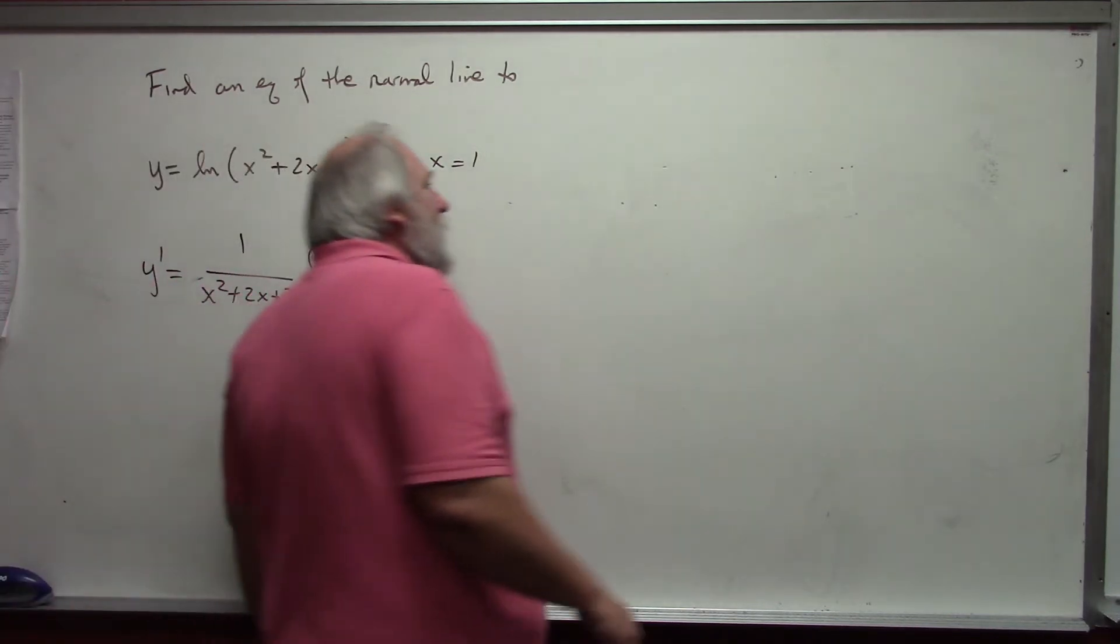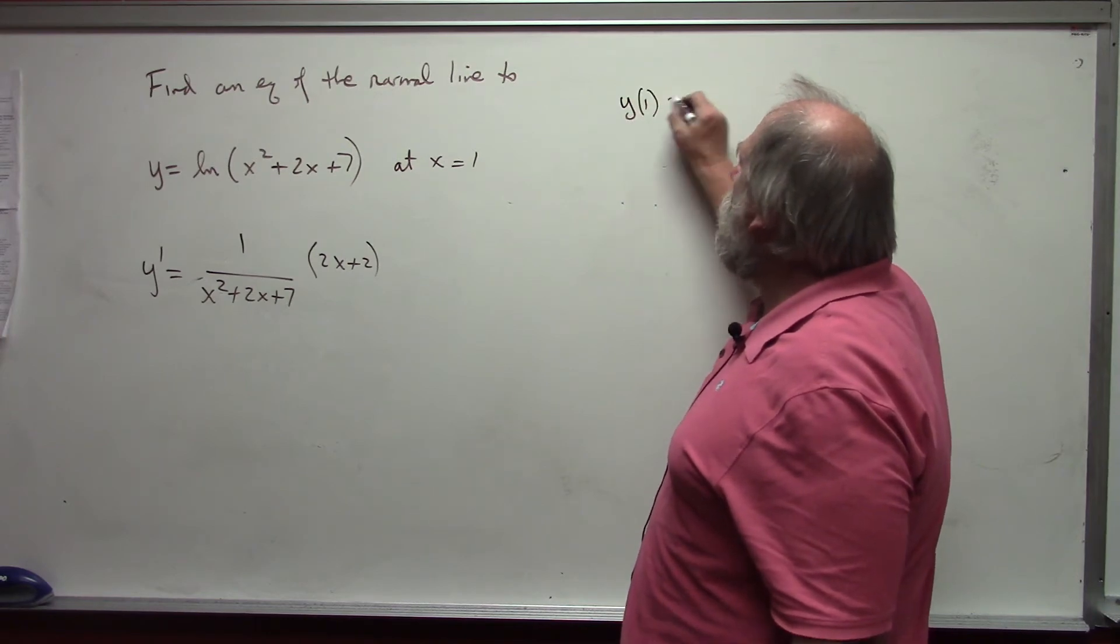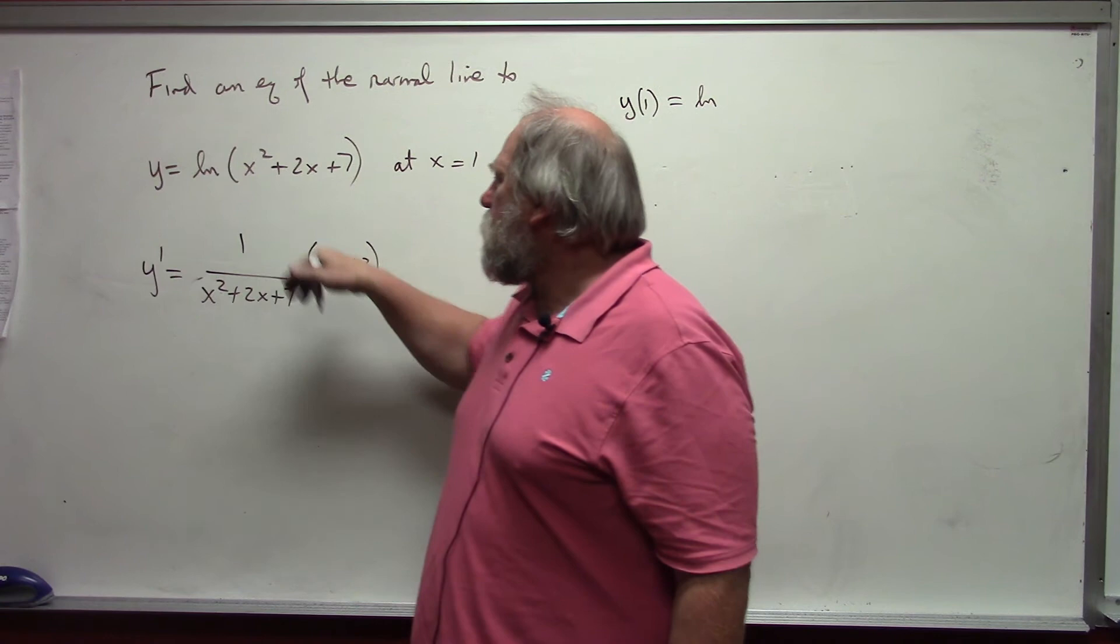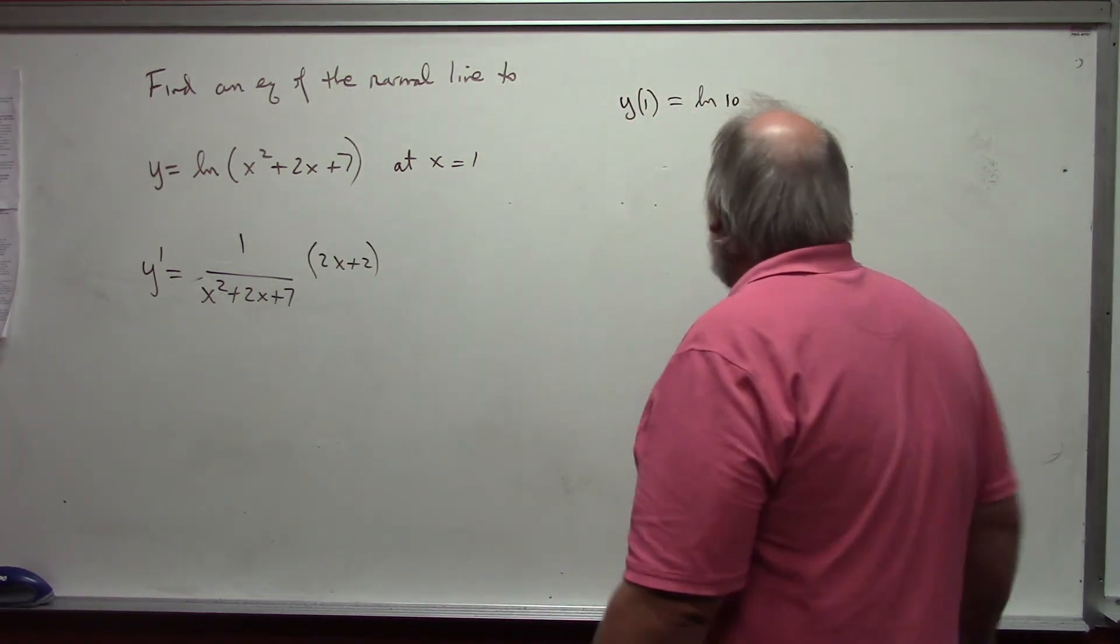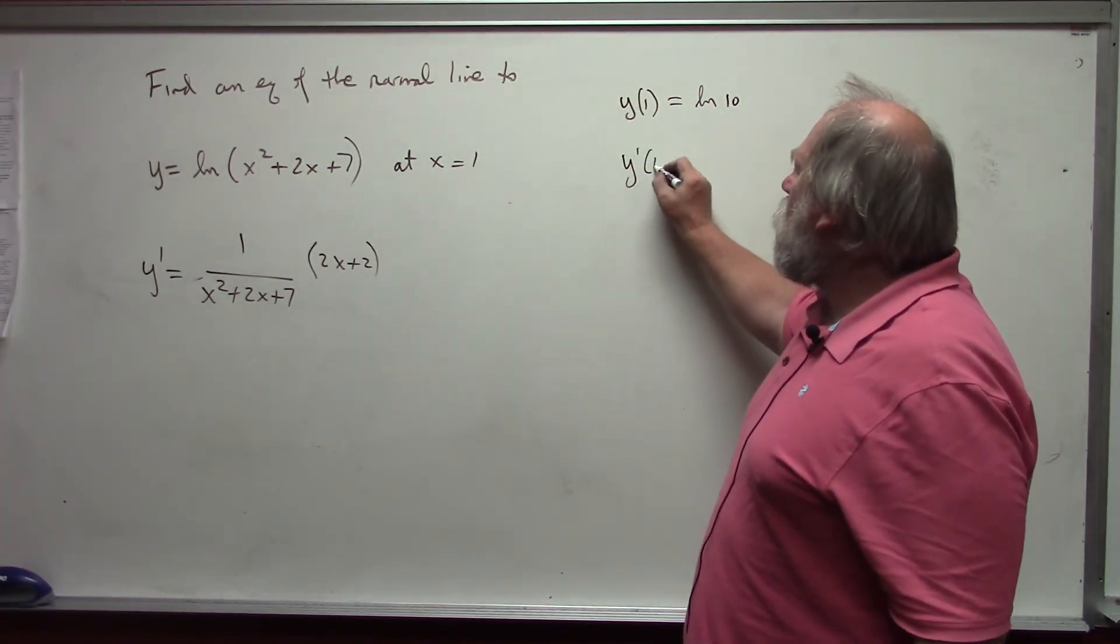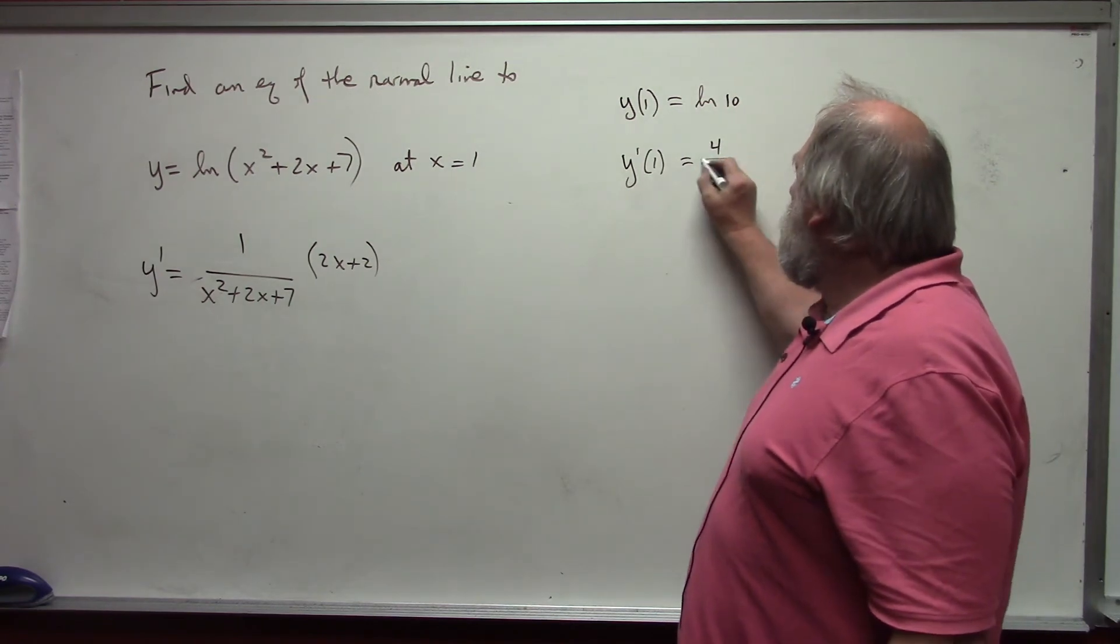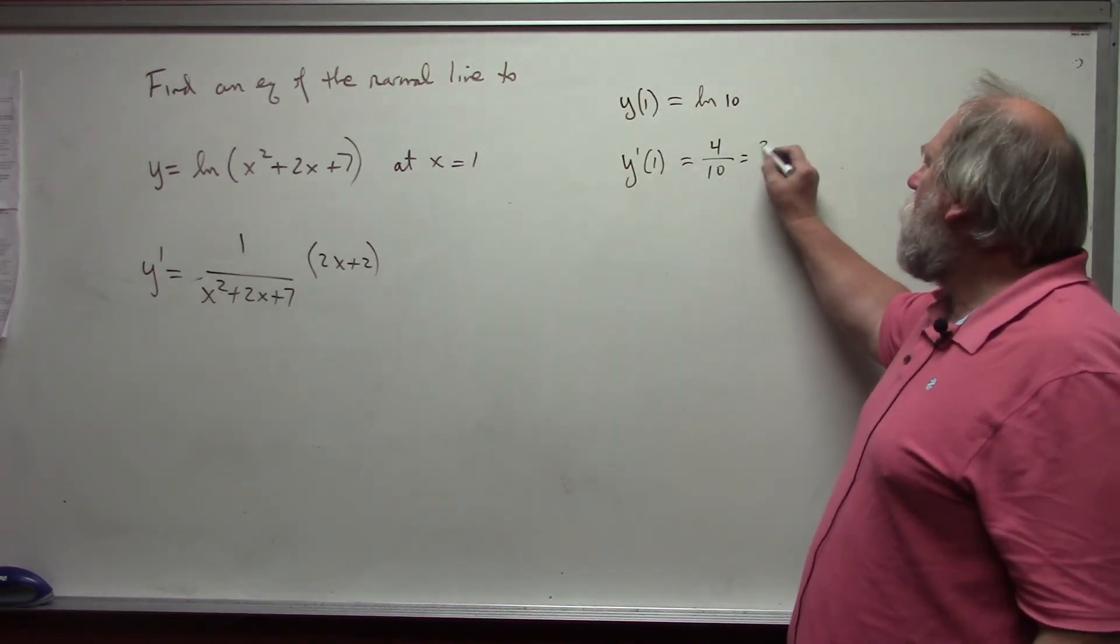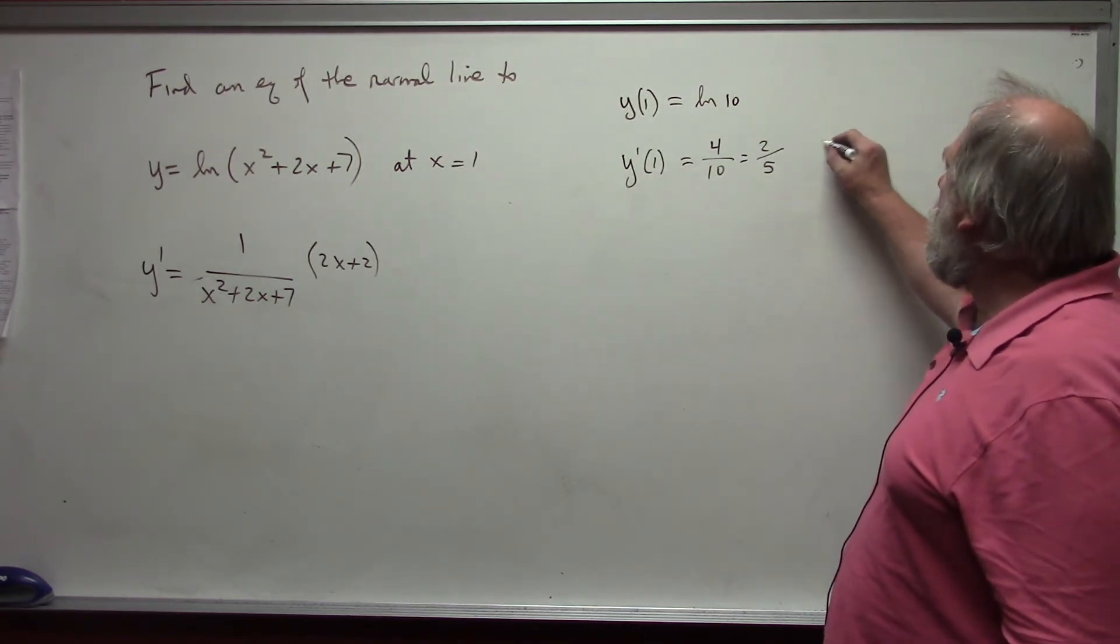The y value at 1 would be the natural log of 1 plus 2 plus 7 is the natural log of 10. I'm just going to leave it like that. That is the exact value. The derivative at 1 would be 4 over 10 or 2 fifths.